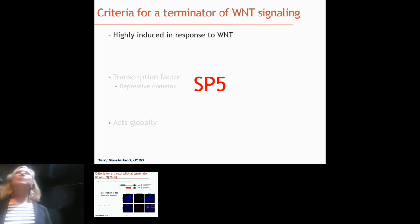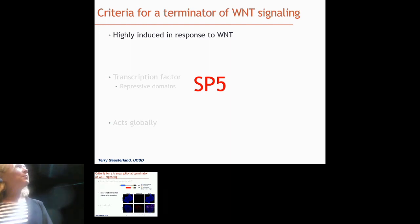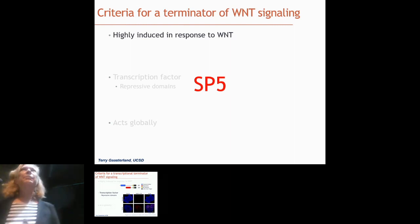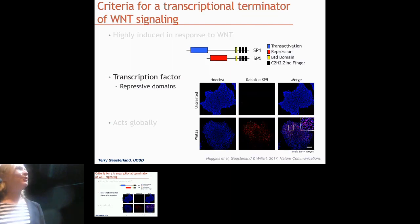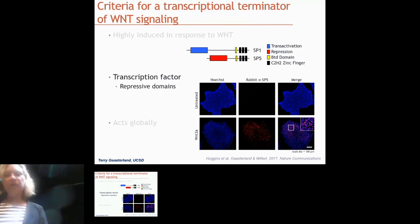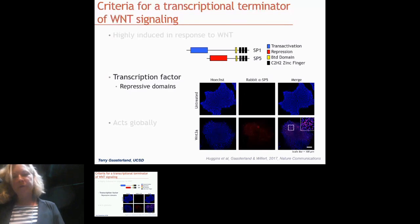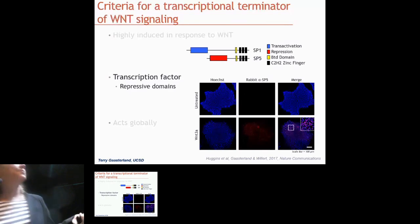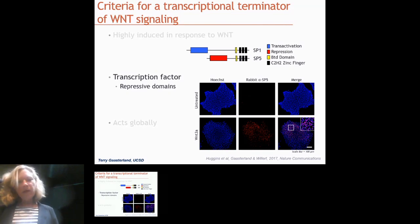SP5 is part of the SP family of proteins; SP1 is the major member. SP1 occupies many genes across the genome in any given tissue, binding a GC-rich site to keep genes on. SP5 has a repressor domain — it doesn't bind the cofactors that keep the gene on. Instead, it knocks SP1 off and binds in its place, setting up that gene for the transcription factor to turn off.